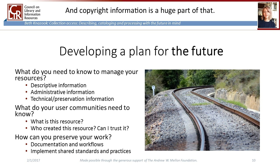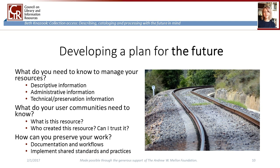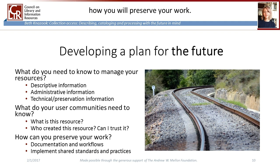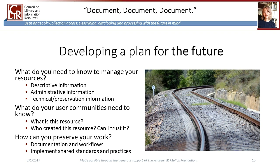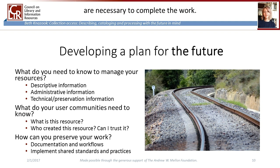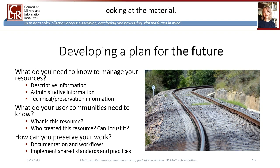Copyright information is a huge part of that. It's one of the most important pieces of information that your users will look for on the web, and it is surprising how often this is overlooked or buried in websites. If you are digitizing content that is in the public domain and you want people to use it, just make sure that they know that. If it's not fine for them to use, make sure that they know that too. Don't hide this information somewhere obscure. And lastly, we need to address how you will preserve your work. Like the GLAM mantra: document, document, document. Create guidelines describing in detail how all aspects of cataloging are to be carried out. You should outline all the required fields and content choices, who is in charge of adding information, approving records, what resources or controlled vocabularies are necessary to complete the work.